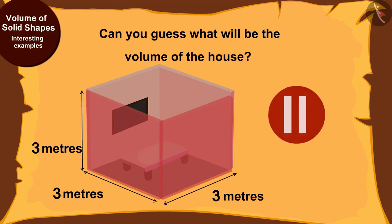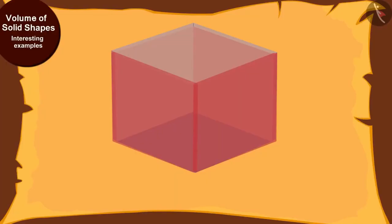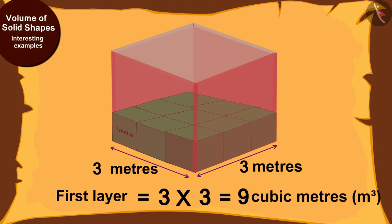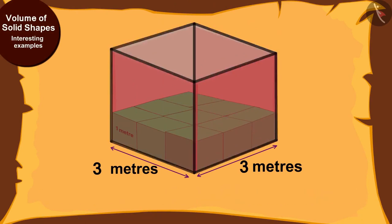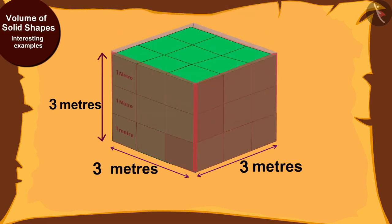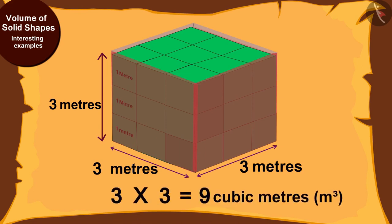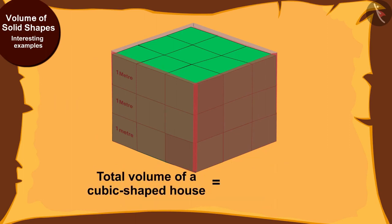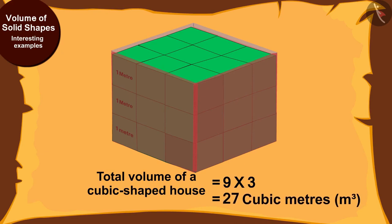The cube shaped house has a length of 3 meters. This means the first layer will have 3 times 3, that is 9 cubic meters. Because the house is cube shaped, its height will also be 3 meters, giving 3 layers. The volume of each layer is 9 cubic meters, so the total volume of the cube shaped house will be 9 times 3, equal to 27 cubic meters.